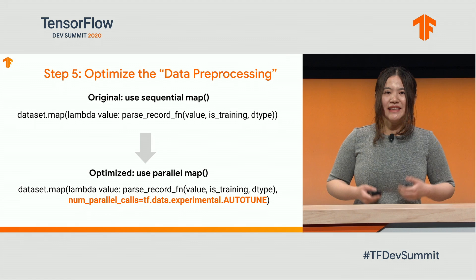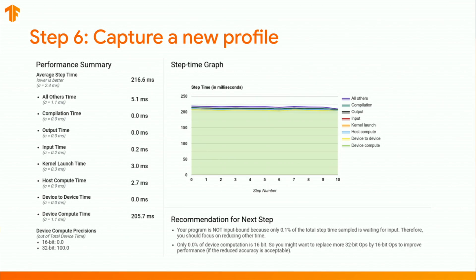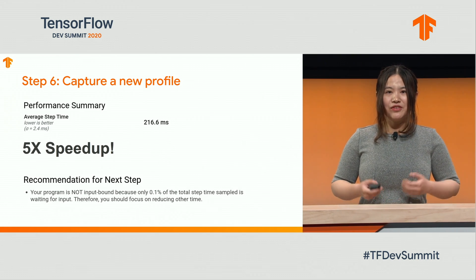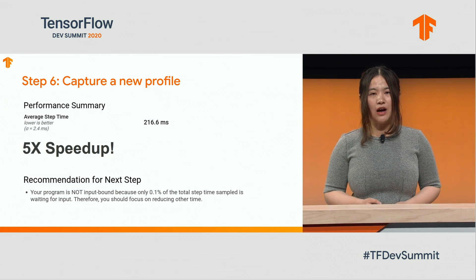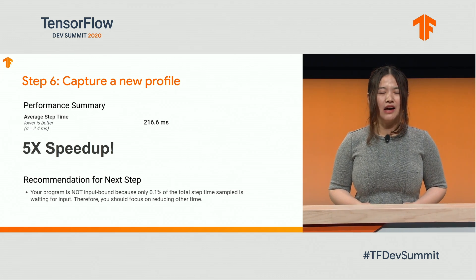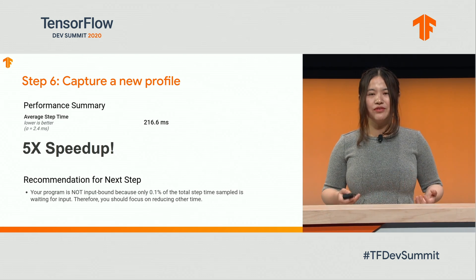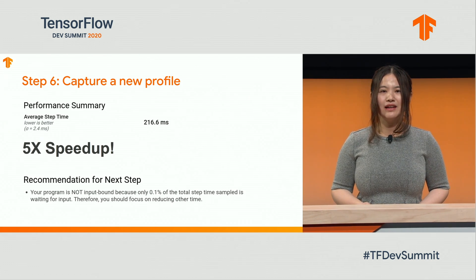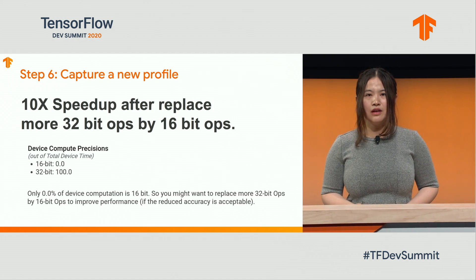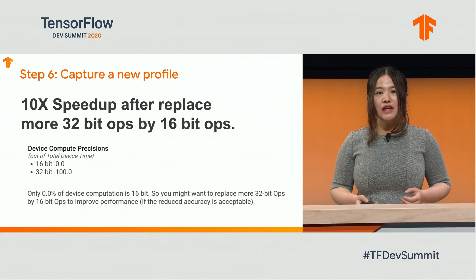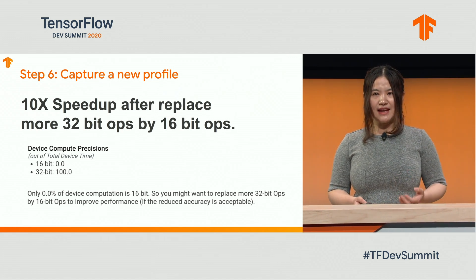After this optimization, let's capture a new profile. Now you can see the redness is all gone in the step-time graph, and the model is no longer input-bound. Checking the performance summary again, you get a 5x speedup. The Overview Page now recommends differently — it says your program is not input-bound because only 0.1% of the total step-time is waiting for input. Therefore, you should focus on reducing other time. Looking at the other recommendations, the model is using 32-bit precision. If you replace all of that with 16-bit, you can get a 10x speedup.